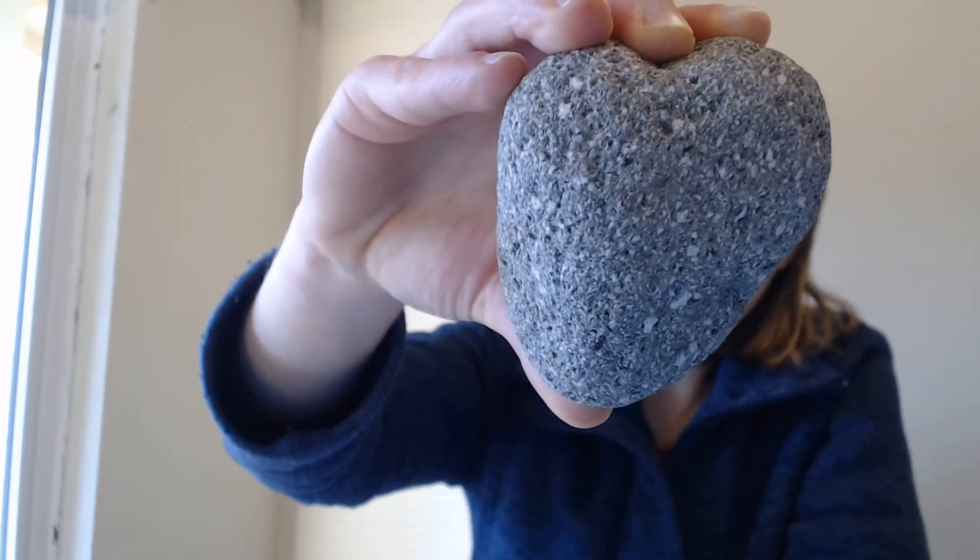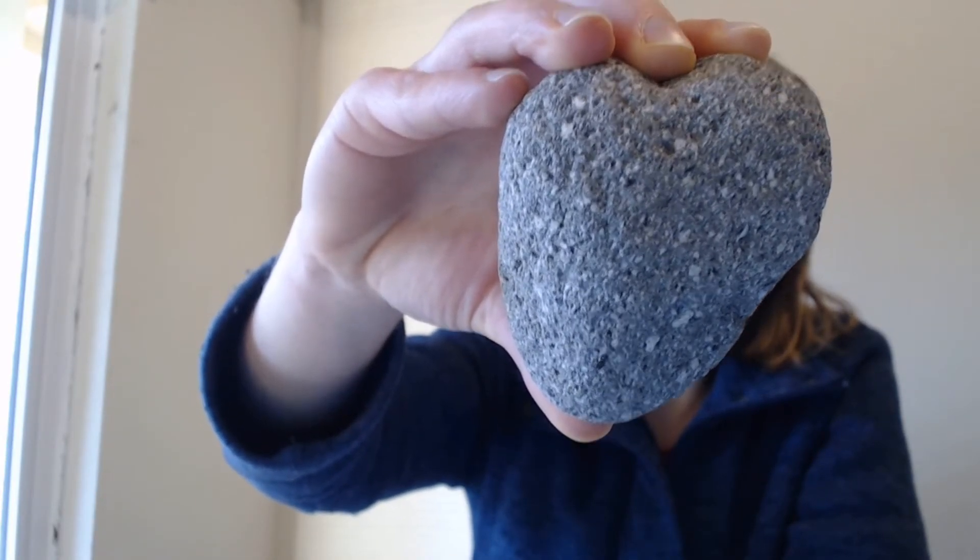For example, you might now notice some white specks on the rock. These specks are larger crystals that formed in the rock when those parts of the rock cooled more slowly than the rest of the rock.